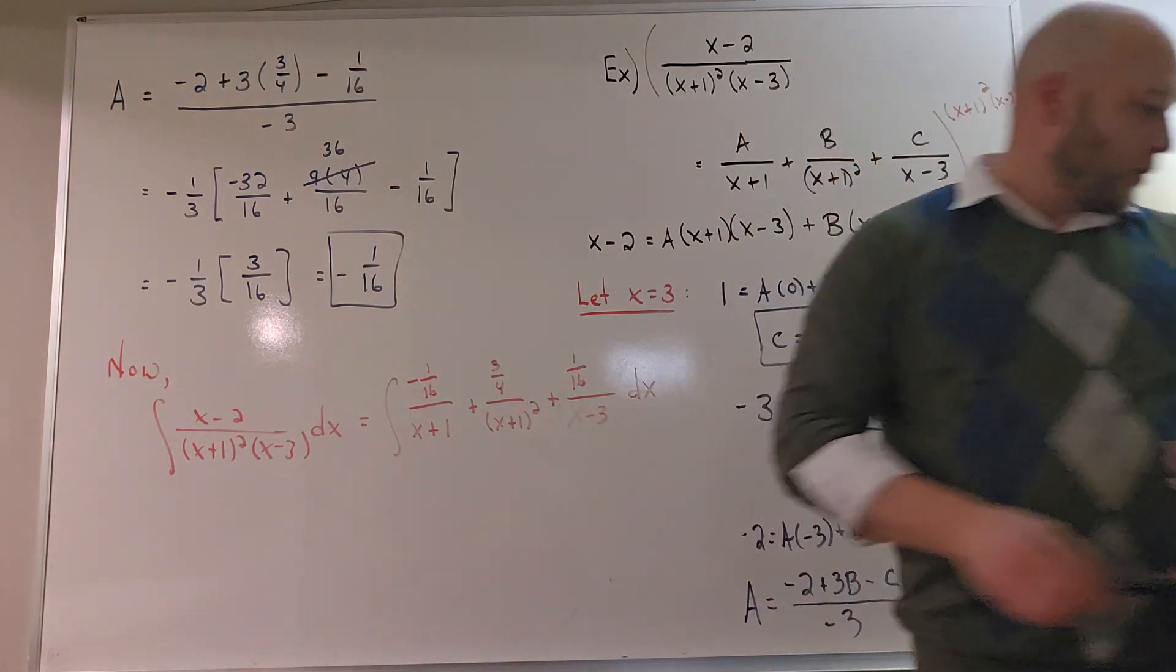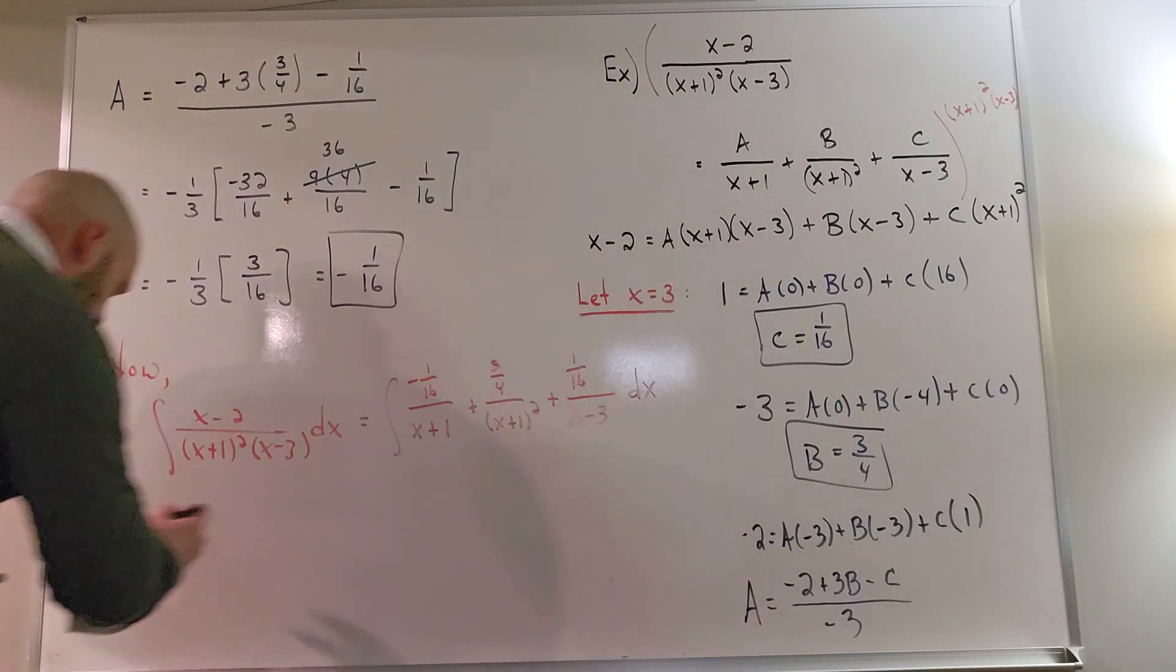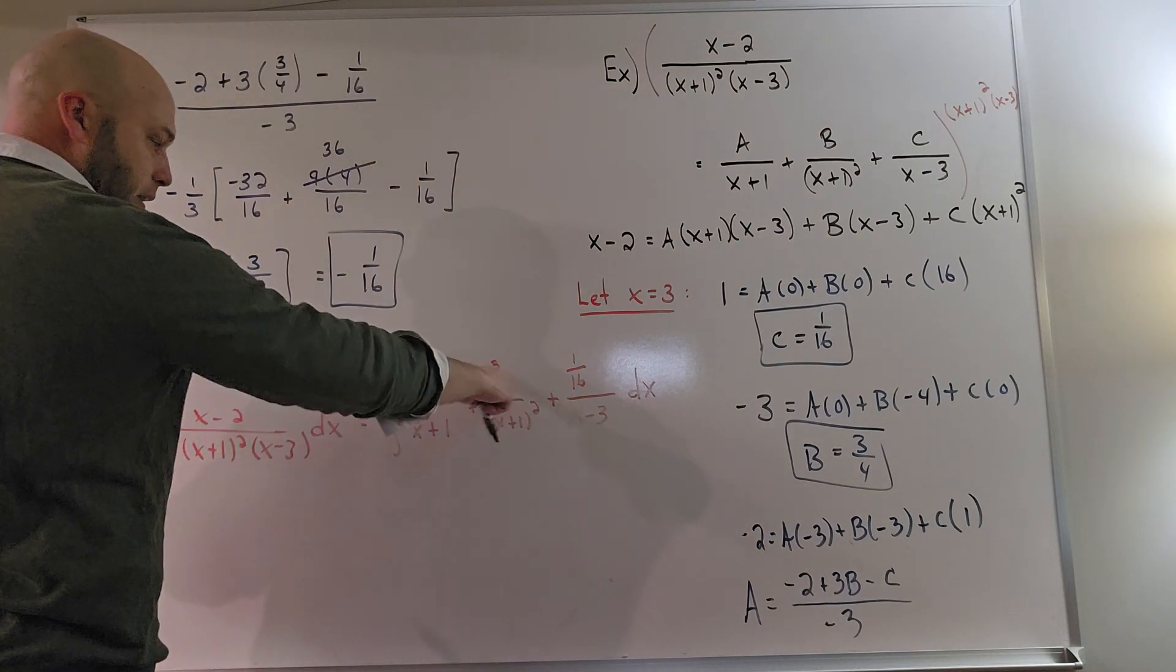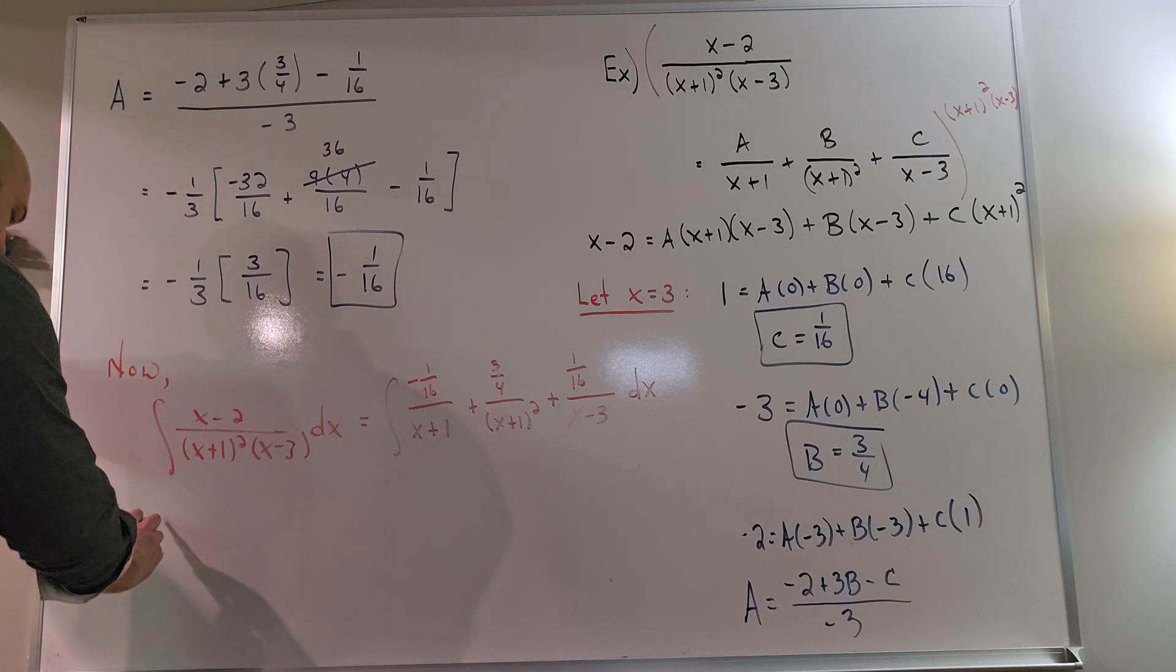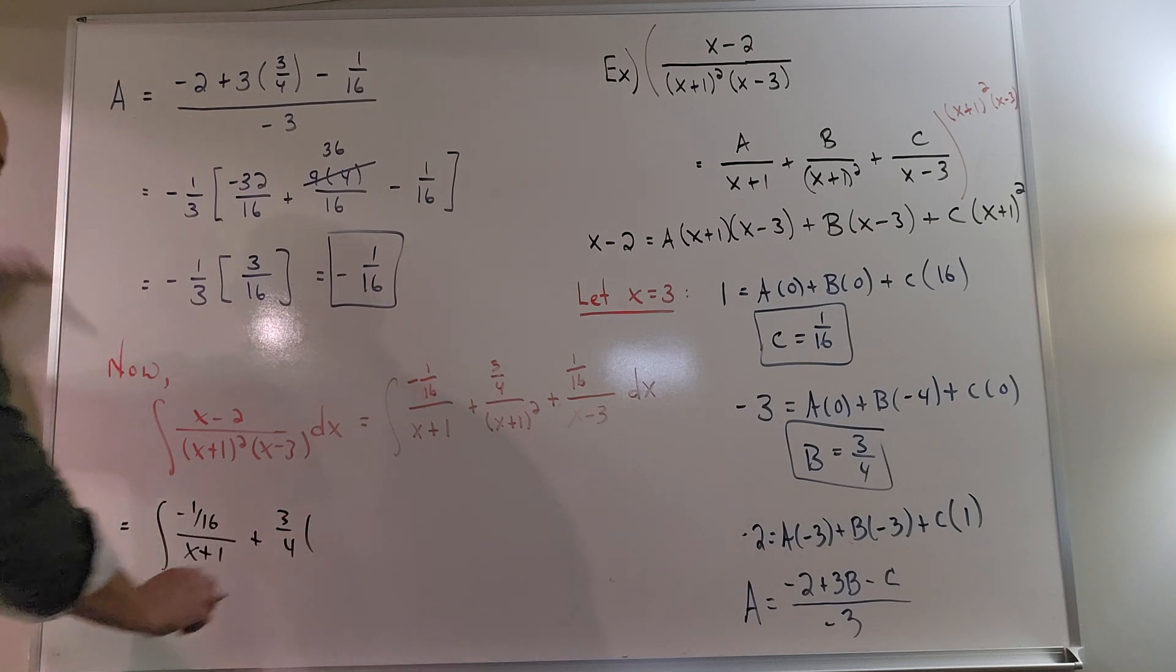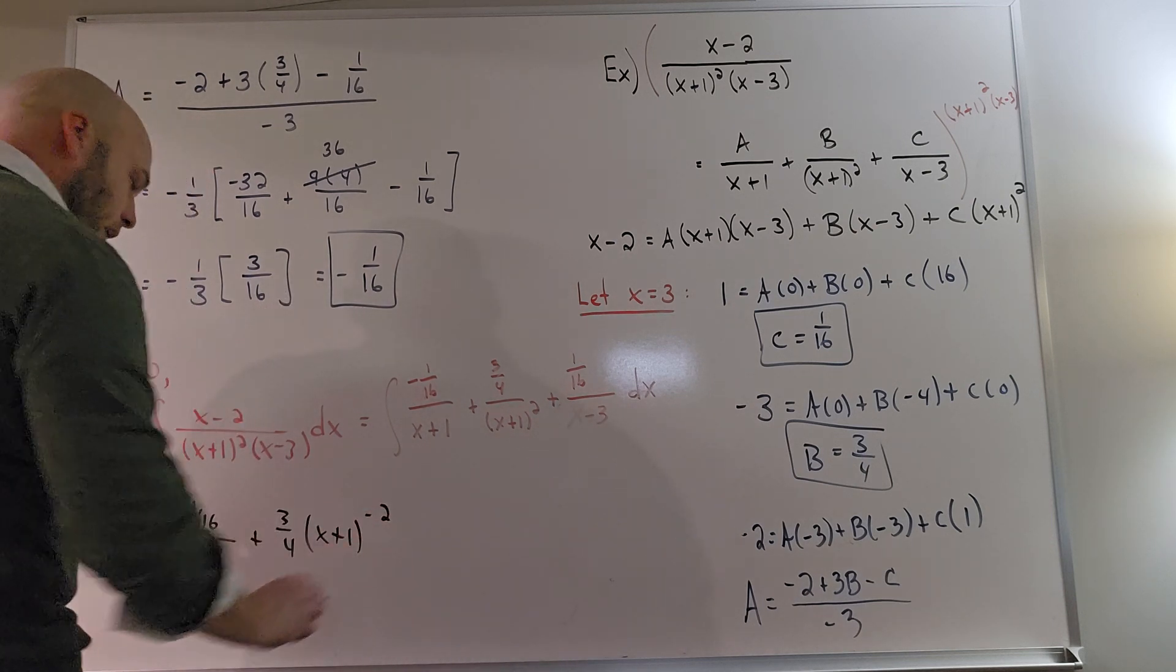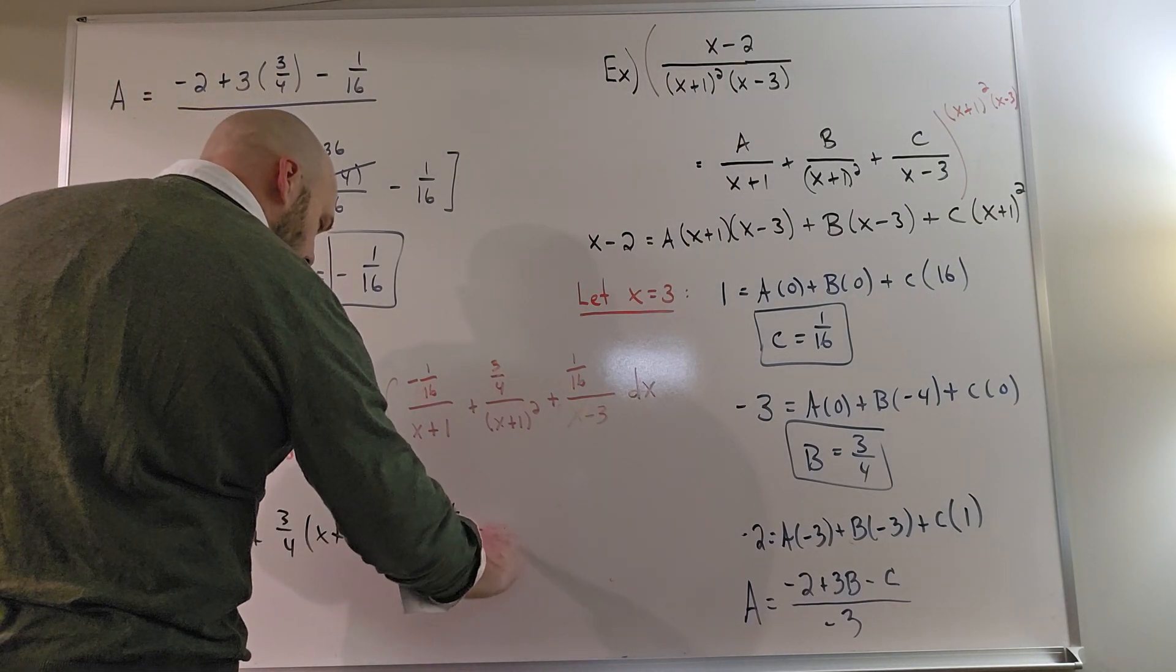Now let's integrate each of those terms. One thing before I integrate x plus 1 squared, I'll rewrite that term so that it looks more familiar to integrate. I would have integral, negative 1 over 16, x plus 1, plus 3/4 times x plus 1 to the negative 2, and then plus 1/16, x minus 3.